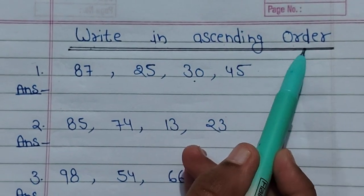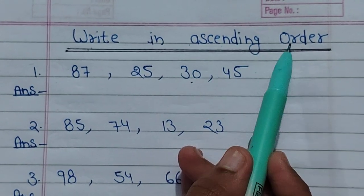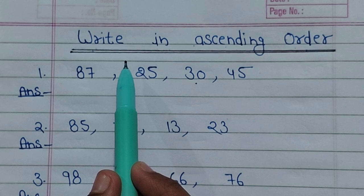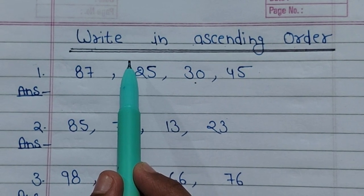Write in ascending order. Ascending order means arranging from smallest value to largest value.